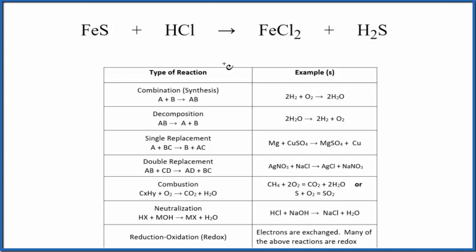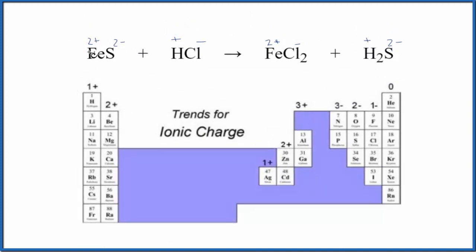In a double displacement, the positive ions switch places. Let me write the charges in for these. We have our positive ions, the iron 2 ion and the hydrogen. The iron right now is with the sulfur, but it's going to join up with the chlorine, so we end up with iron 2 chloride.